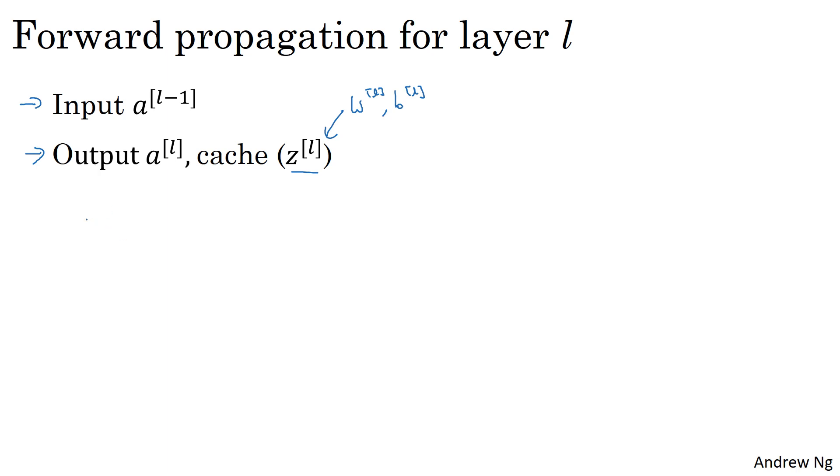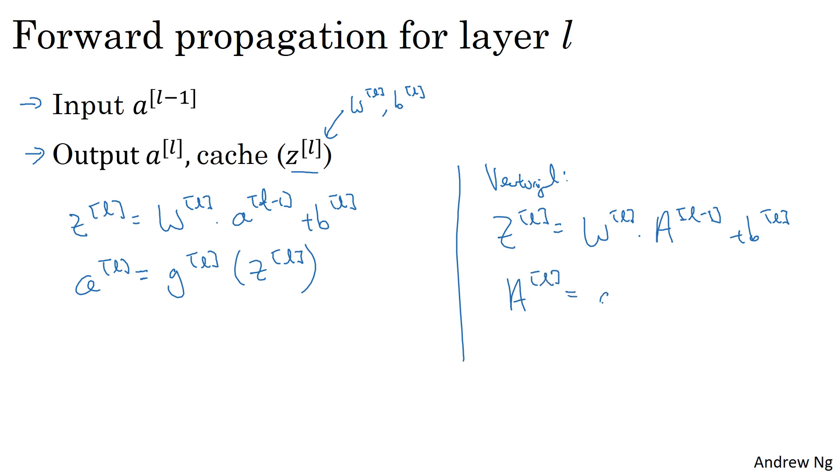The equations for this should already look familiar. The way to implement a forward function is: z equals W^(l) times a^(l-1) plus b^(l), and then a^(l) equals the activation function applied to z. For a vectorized implementation, it's Z^(l) equals W^(l) times A^(l-1) plus b, with b being added using Python broadcasting, and A^(l) equals g applied element-wise to Z.